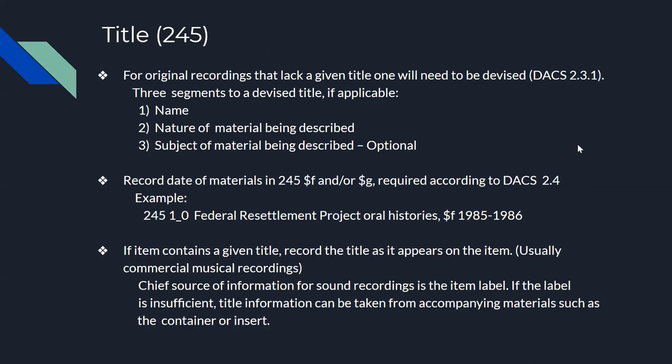Most original non-professional sound recordings will not have a given title — if someone hand-recorded it themselves, they usually don't have a printed label. So if there's not a given title, you as a cataloger will need to devise one. A devised title can be constructed using DACS rule 2.3.1.